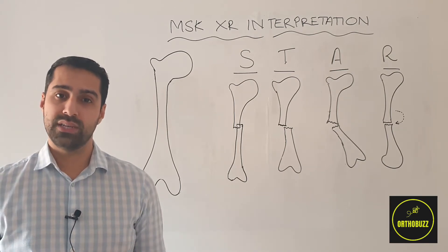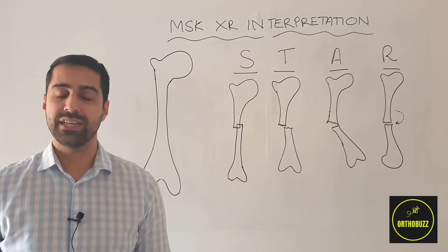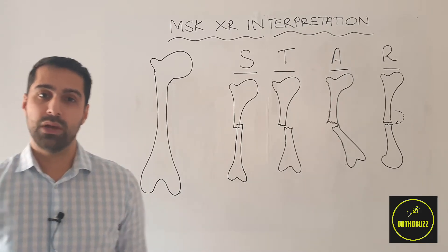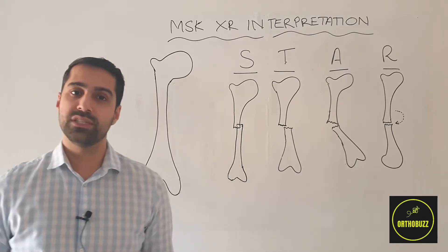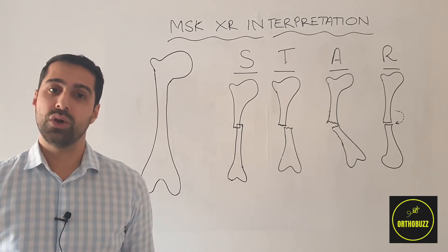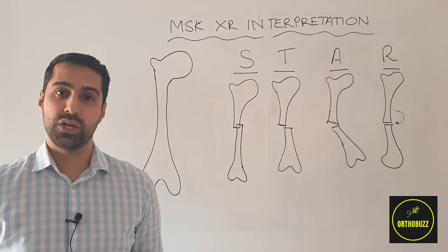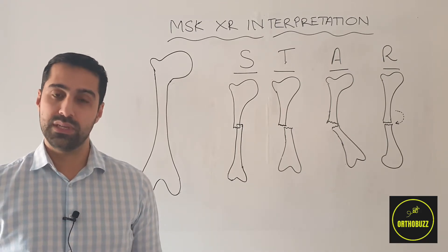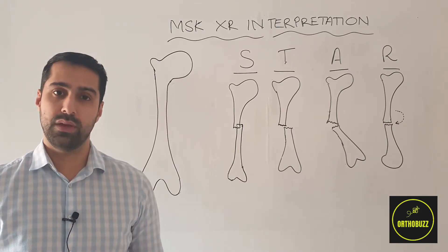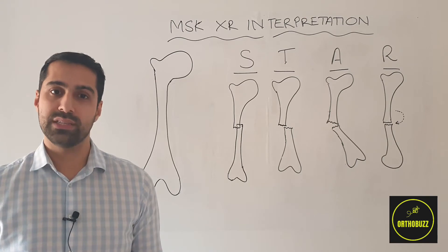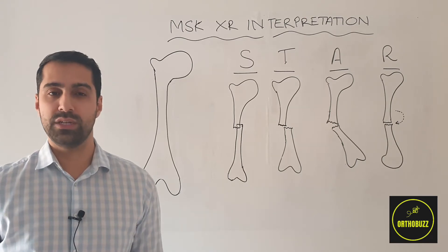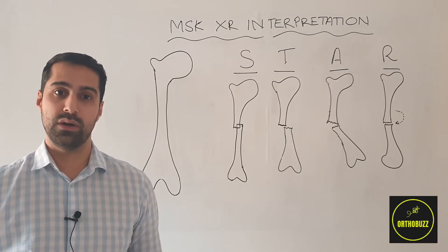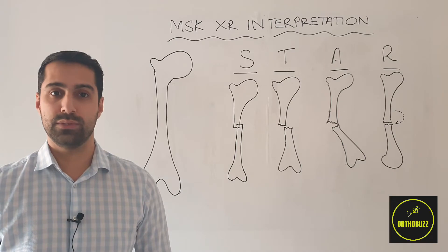Step one: we're going to identify that we have the correct patient and the correct x-ray. This can be done by looking for three points of identification on the x-ray. This includes the name of the patient, the date of birth and the hospital number, as well as confirming we have the correct image for that patient, as they may have multiple images on our x-ray system.